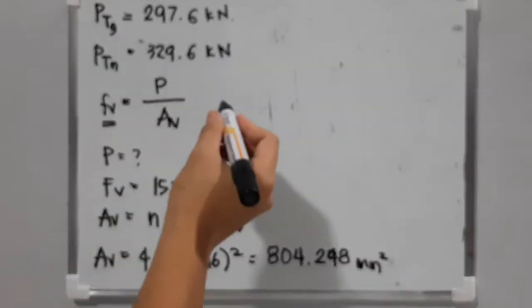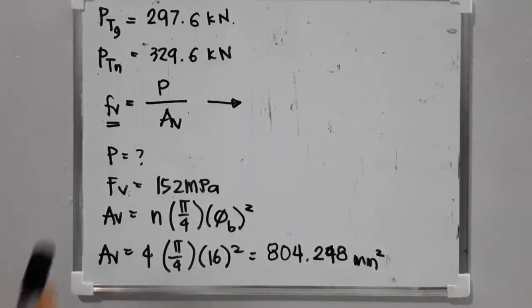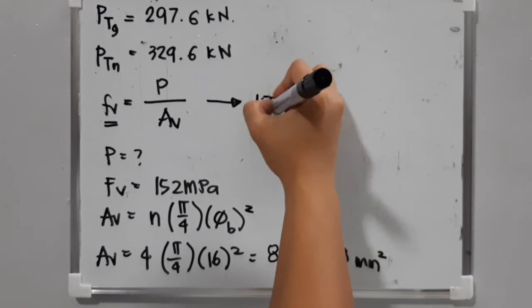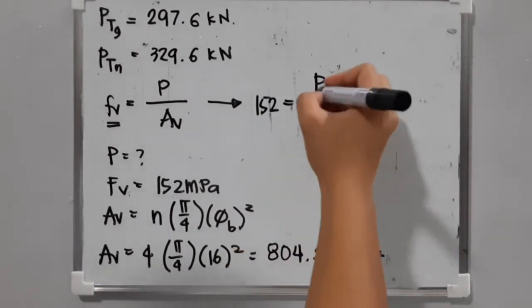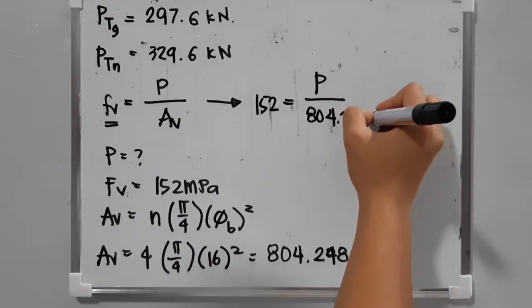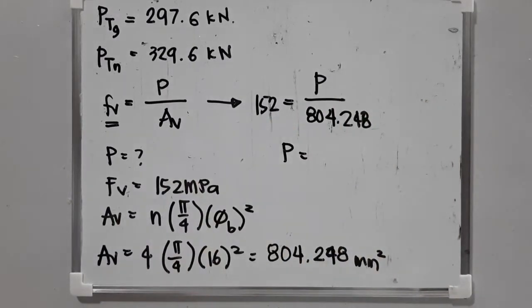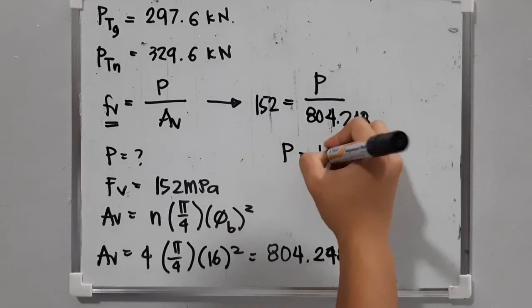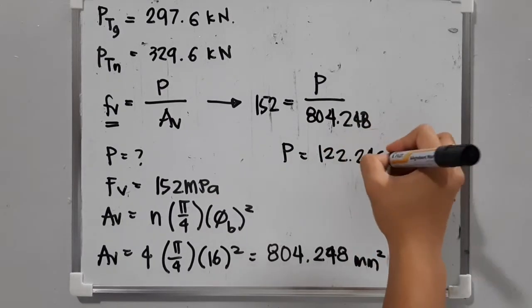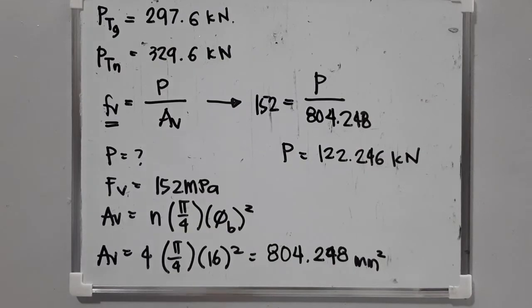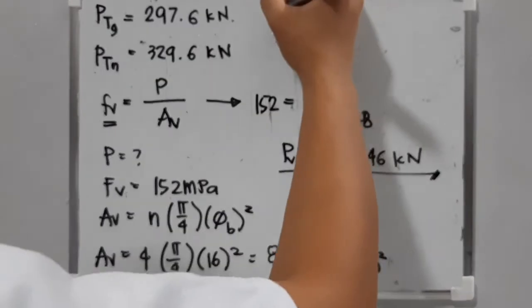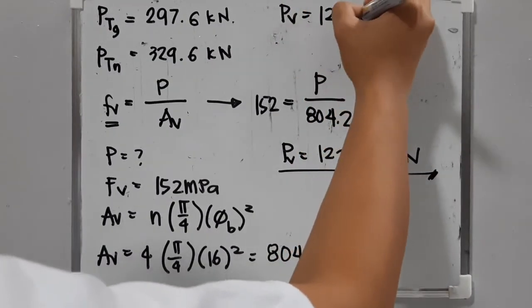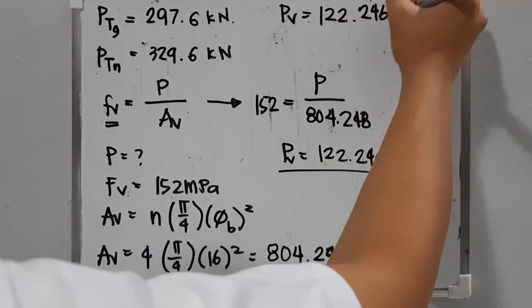Using the formula where allowable equals actual: 152 equals the shear force over 804.248. The load P for shear is equal to 122.246 kN.